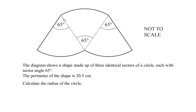We can see that there are three sectors here and each sector has a central angle of 65 degrees. The perimeter of the shape is 20.5 centimeters. Calculate the radius of the circle.